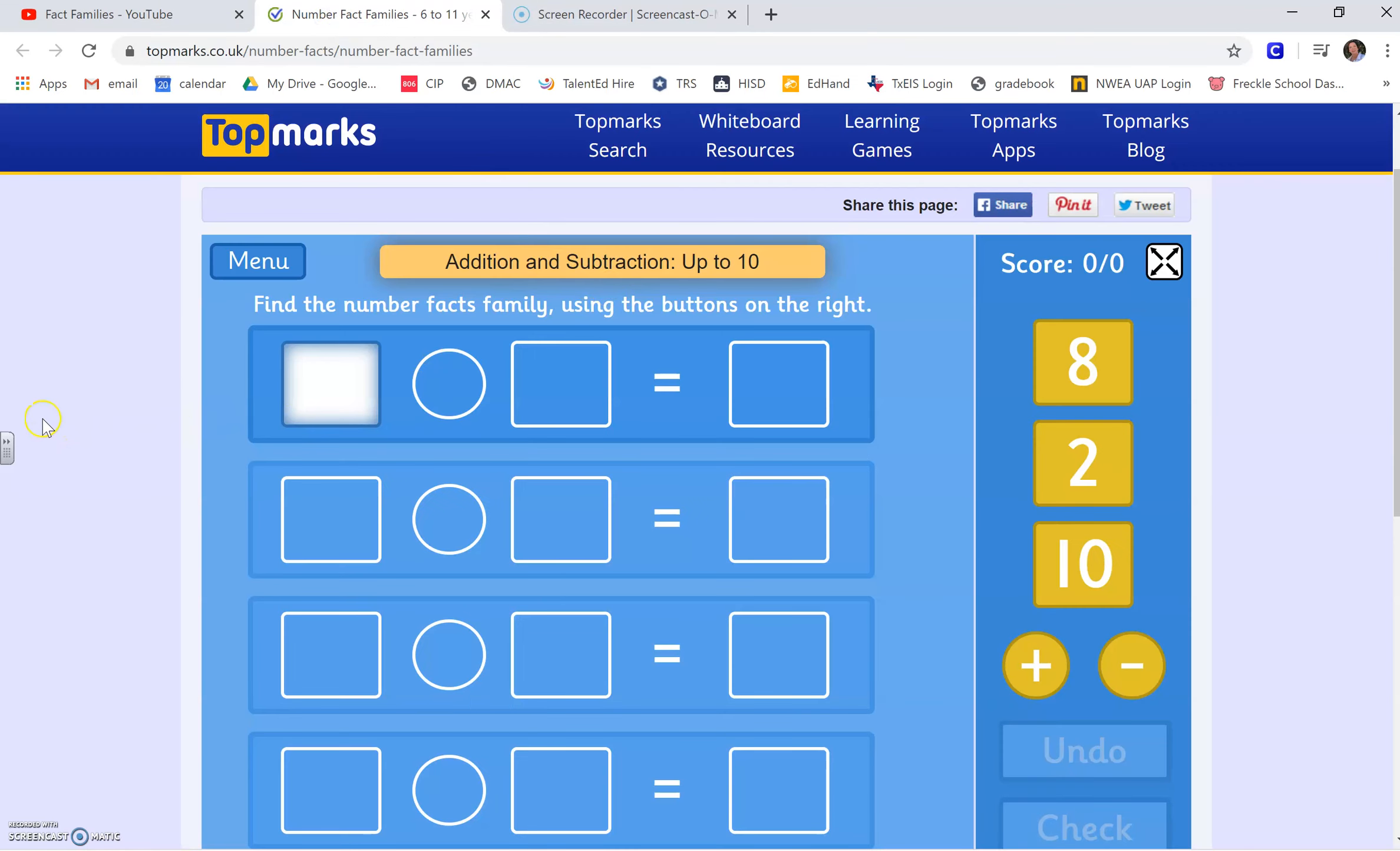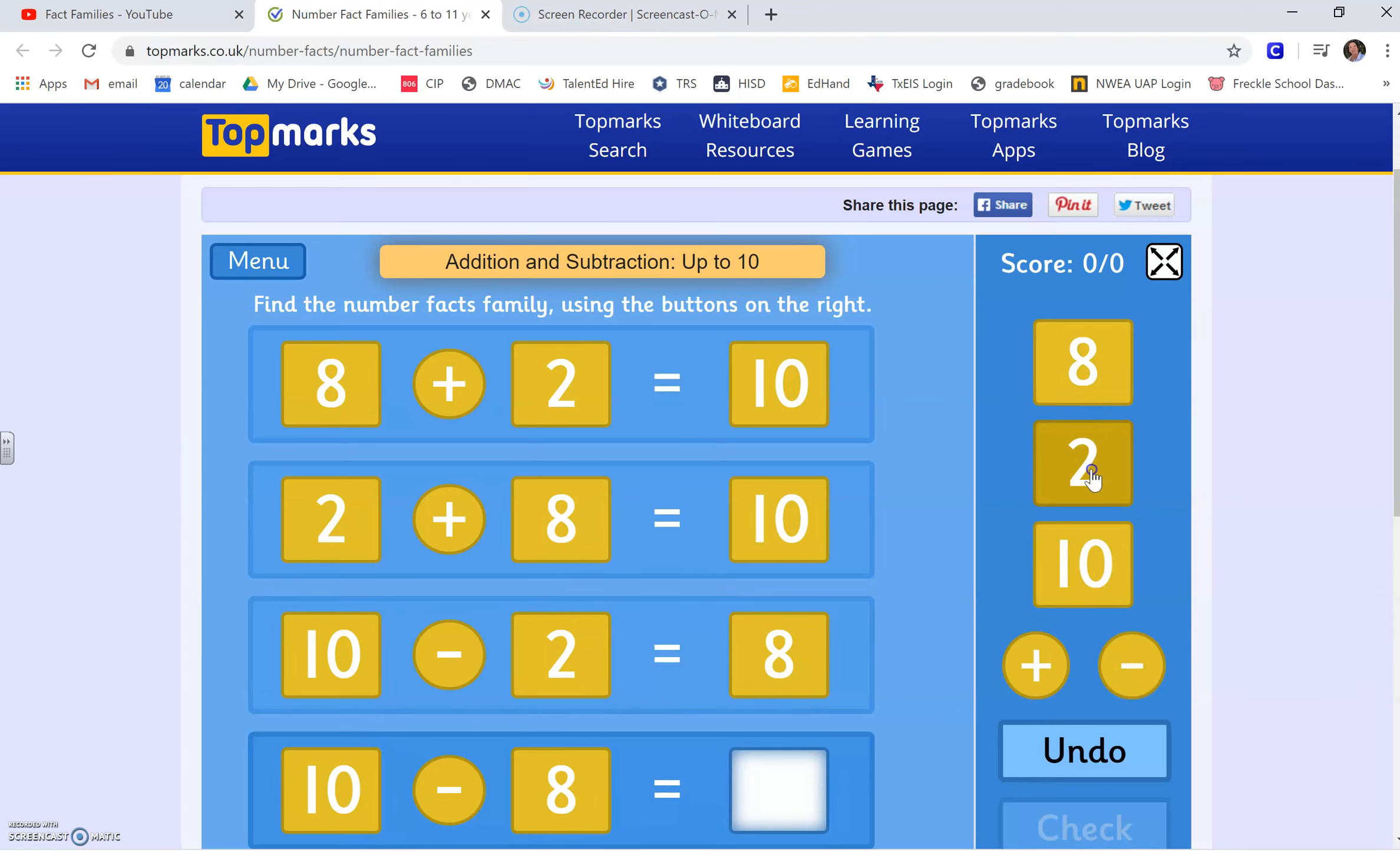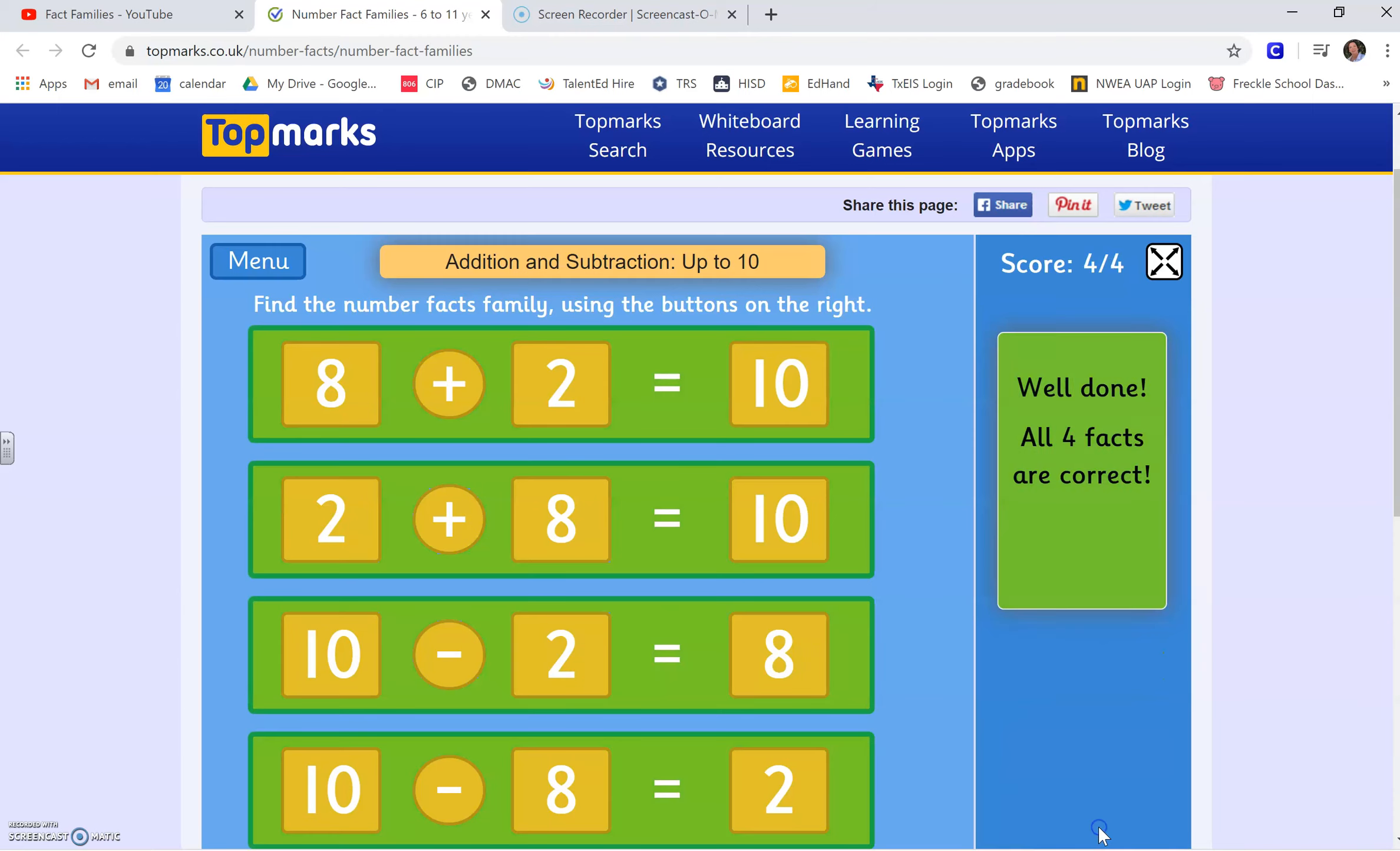Now, I want to show you a really fun game. And I've given you the link. We can do a fact family. So here I have an eight, a two, and a ten. If I say eight plus two equals ten. Can I do two plus eight equals ten? What about ten minus two equals eight? What about ten minus eight equals two? Let's check. See how I did. I got them all right. Yay!